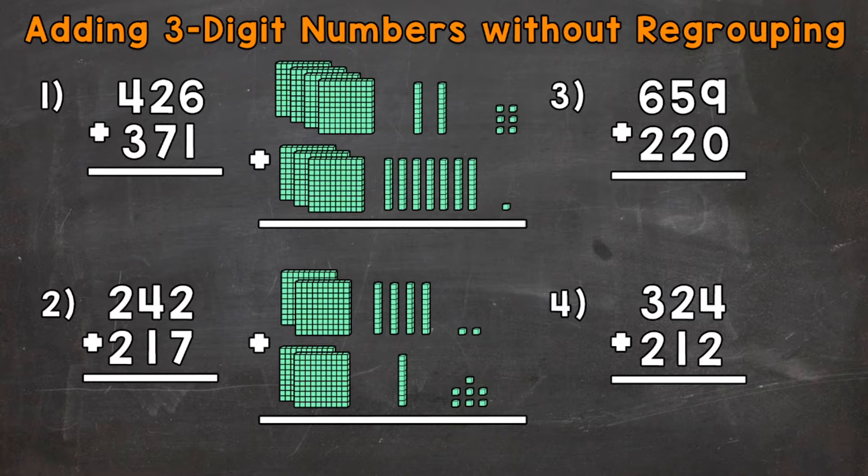So 6 plus 1. We can see that right here. 6 ones plus 1 one. That's going to give us 7 ones.